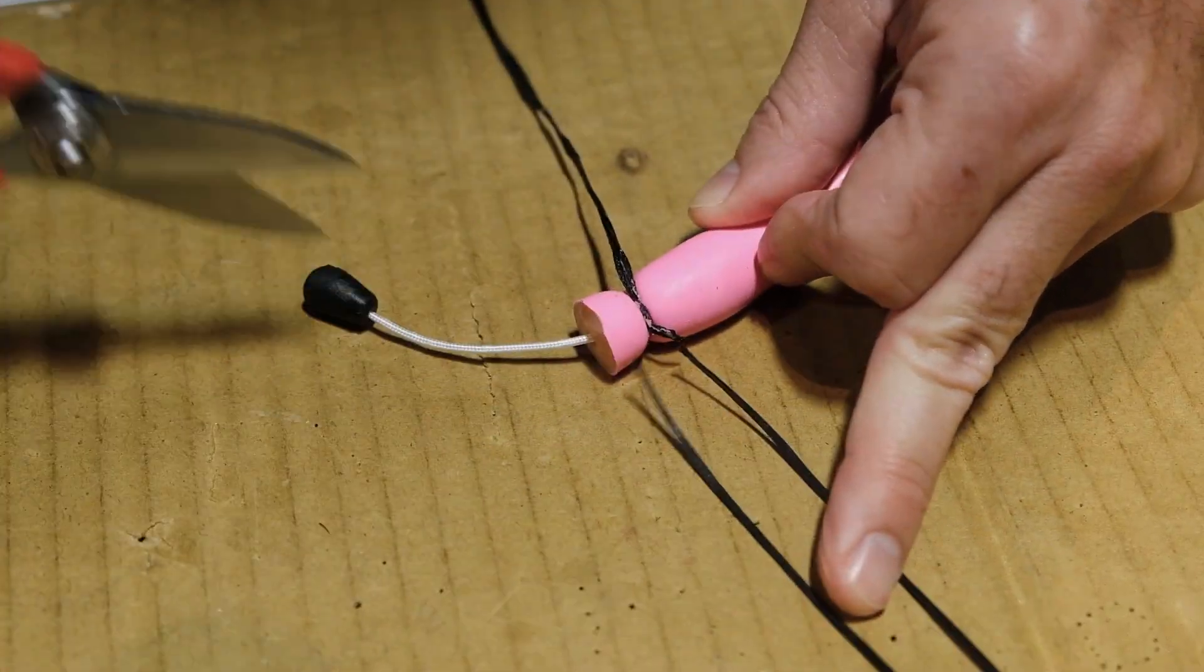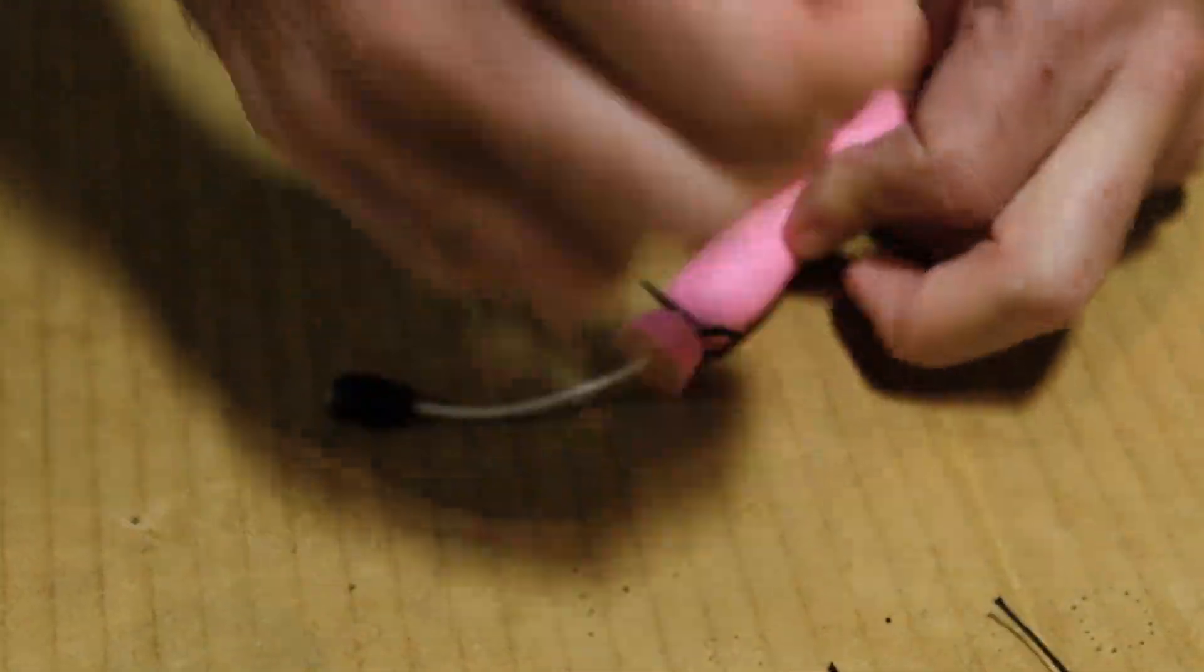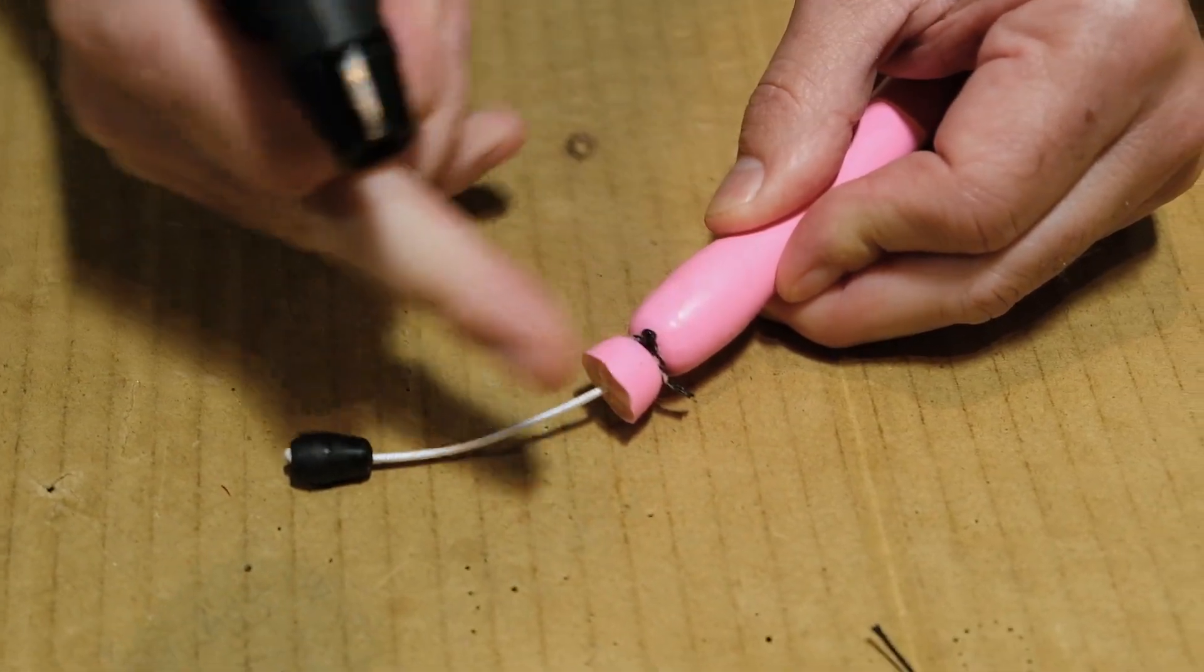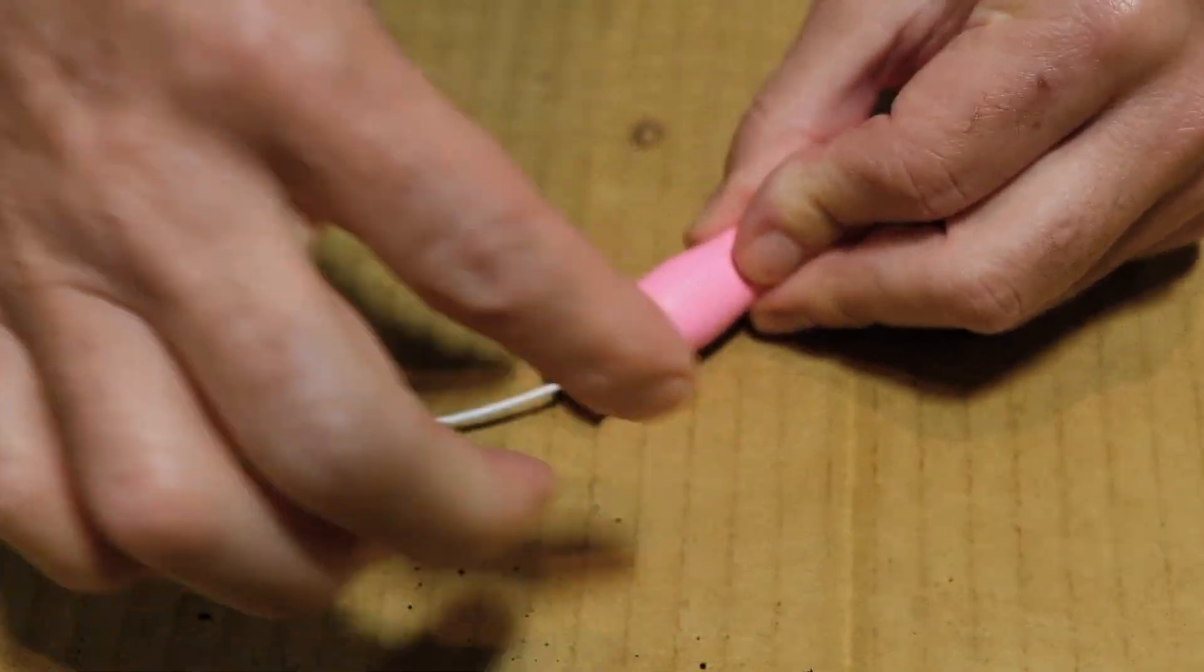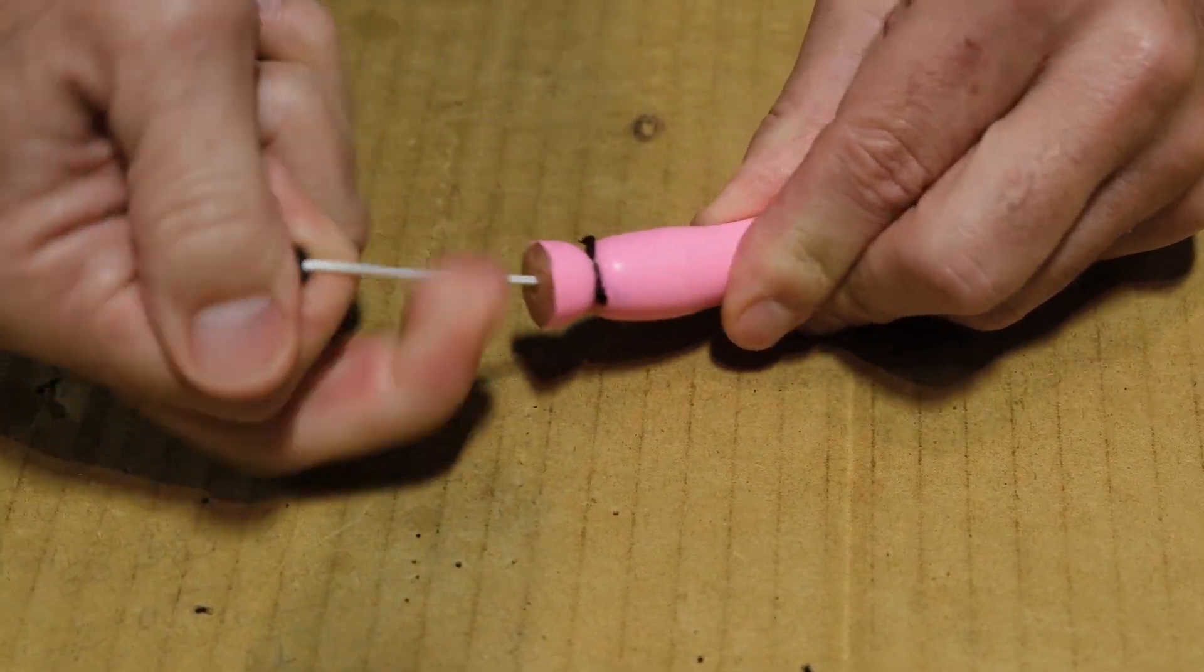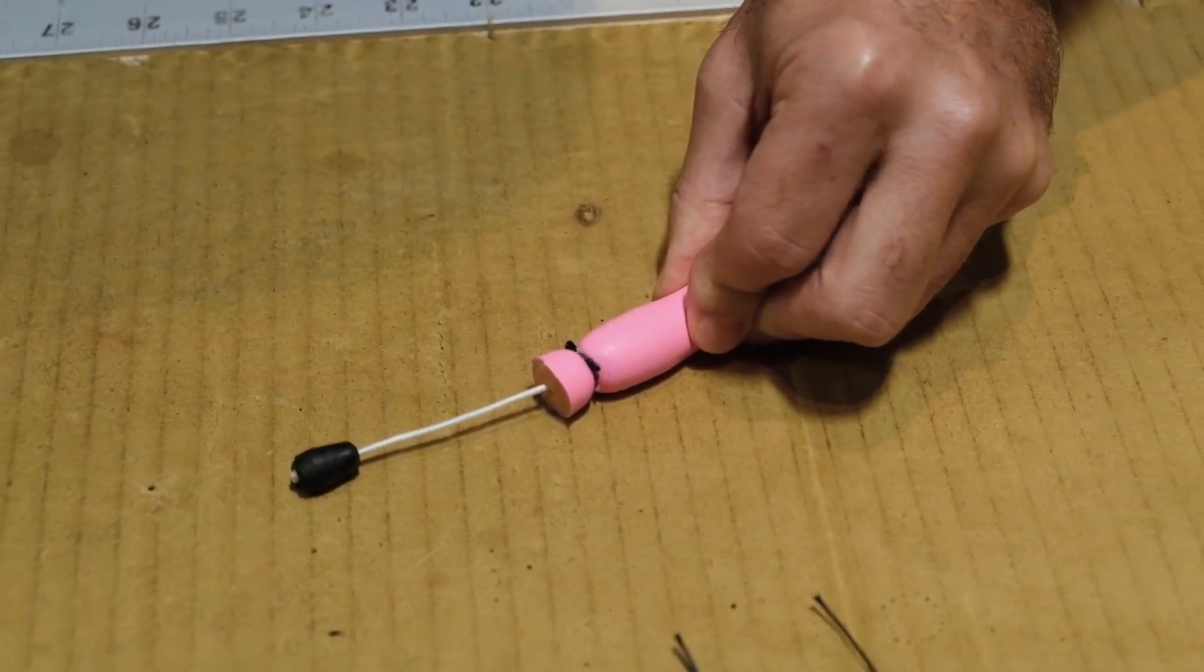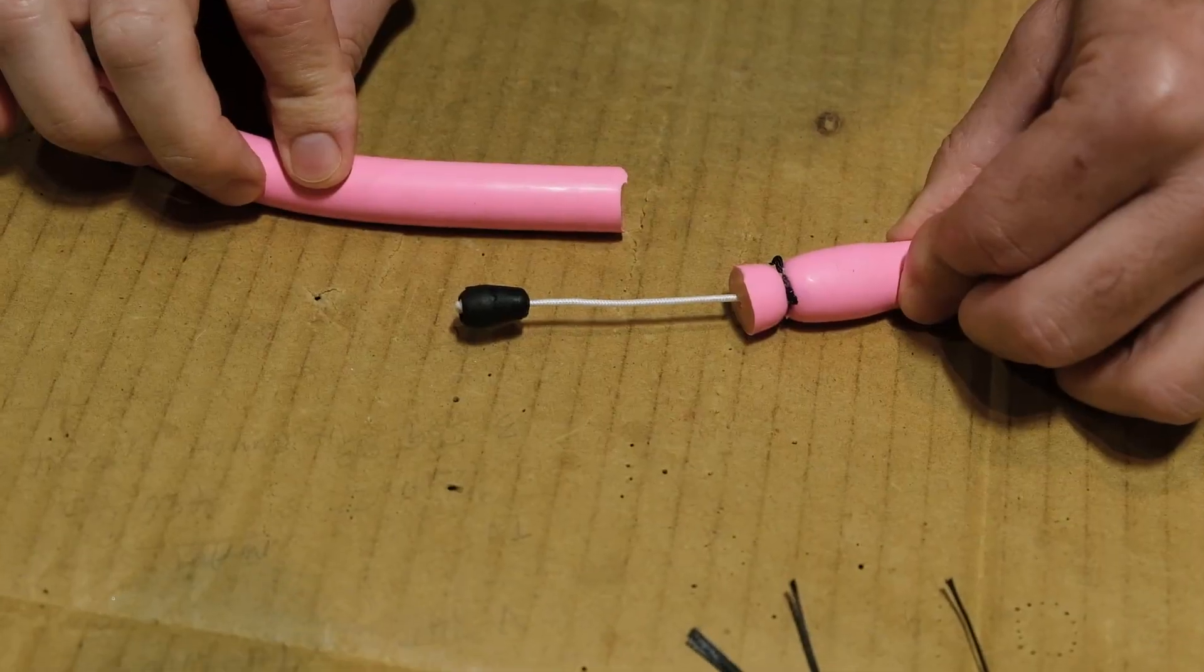Then we simply come and clip the ends off. Have some frayed ends and then we'll just take our torch. Burn these ends nice and good. Not too much so you burn the rubber. But there you have a very secure wishbone inside your speargun rubber. Basically repeat for the second side and you're done.